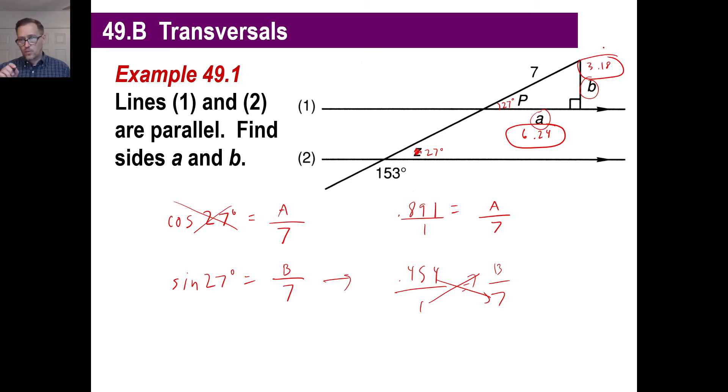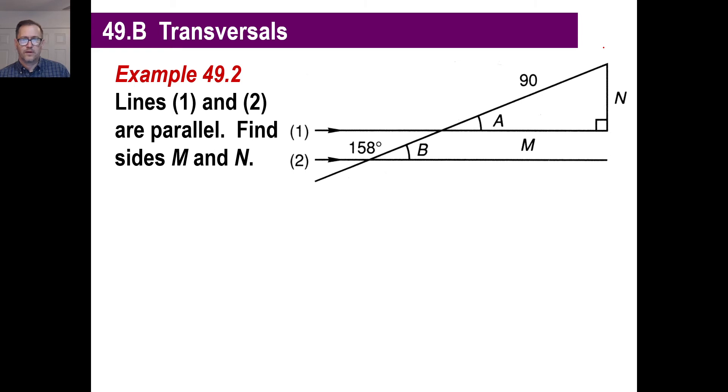And that is how you get A and B on one of those transversals. The only thing different you're doing on this is recognizing that the angles will match up with the below angles in exactly the order that they are. All right. Let's try one more. And this time, same old thing. Parallel, find M and N.